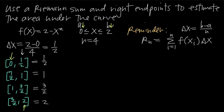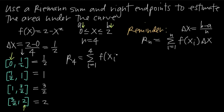The Riemann sum formula is R sub n equals the summation from i equals 1 to n of f of x sub i times delta x. Here n equals 4, so it's R sub 4. x sub i refers to the right endpoint of the i-th subinterval. We expand the sum by plugging in each right endpoint. For x equals 1/2: 2 minus (1/2)² = 2 minus 1/4 = 7/4. For x equals 1: 2 minus 1 = 1. Delta x is 1/2.